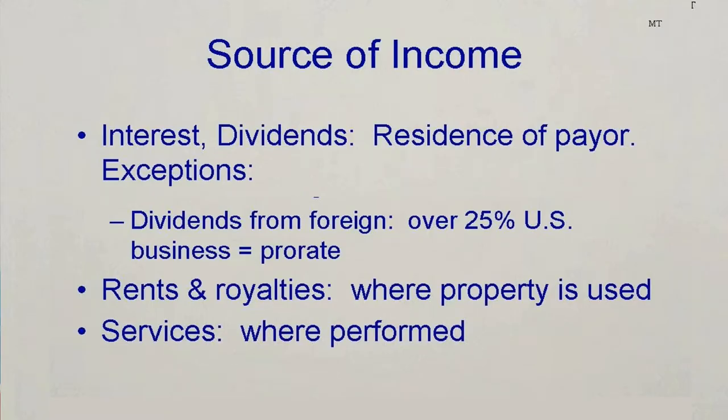Income from performance of services is treated as arising where the services are performed. If Joe gets paid for 40 days of work and he spent 30 of those days working in Mexico and 10 in the U.S., then three-fourths of his pay is foreign source income.